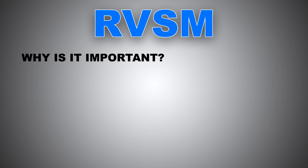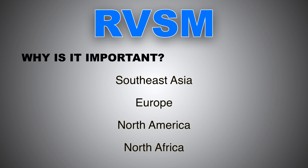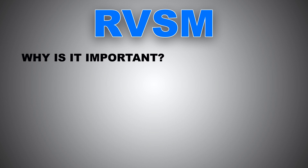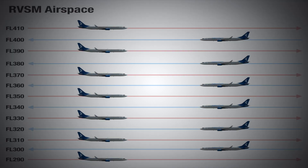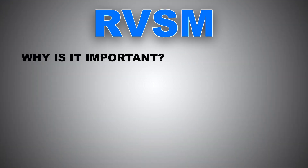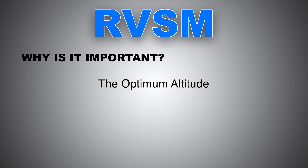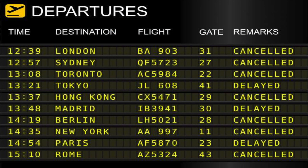RVSM is the natural traffic solution for the increased demand of air travel worldwide, especially in congested airspaces such as Southeast Asia, Europe, North America, and North Africa. RVSM provides enhanced capacity by giving airspace users more flight levels, more possibilities for optimizing flight profiles — meaning flying at or as near as possible to the optimum altitude — and increasing airspace capacity, which in return reduces delays.